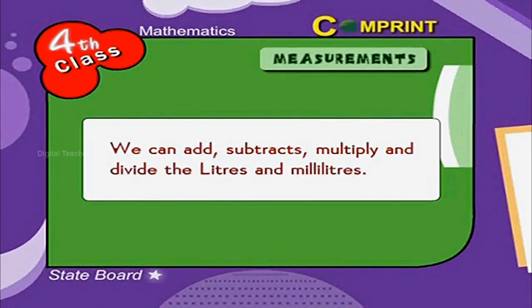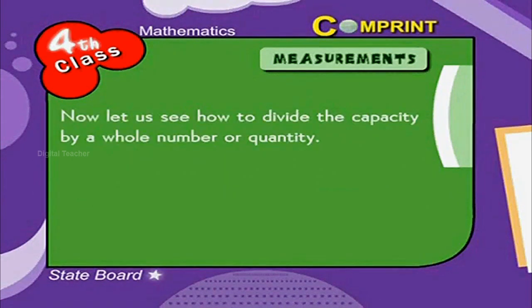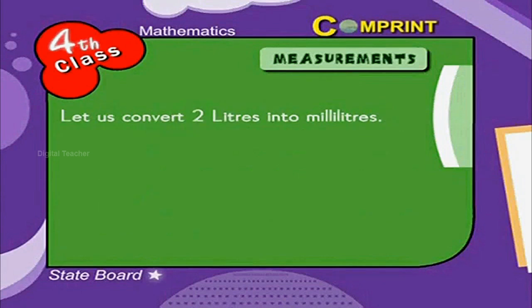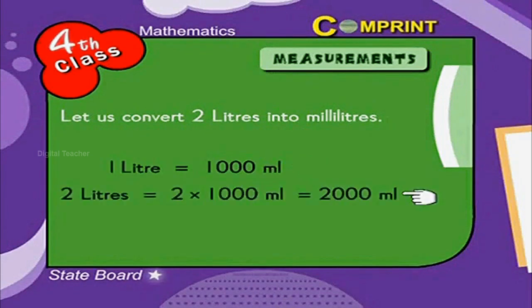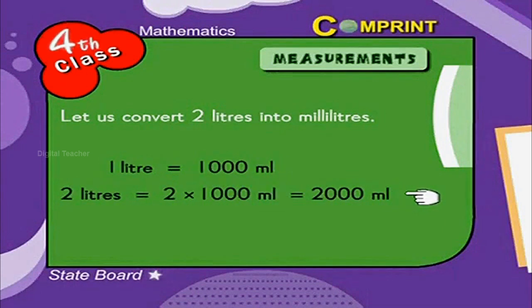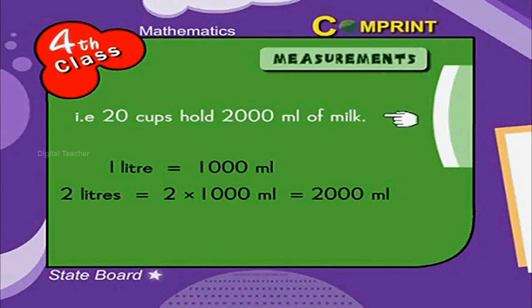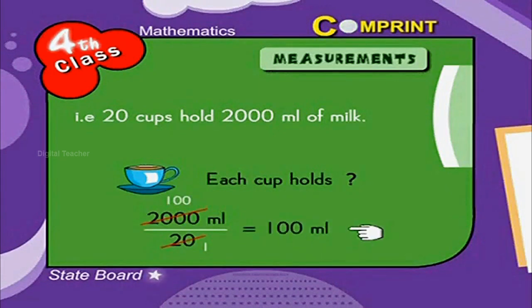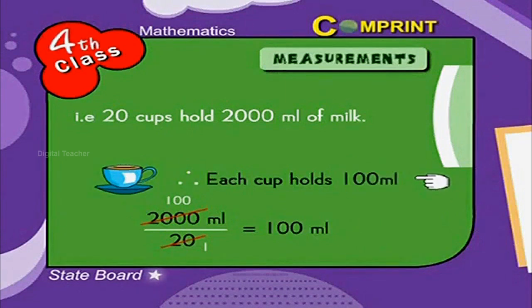As before, we can add, subtract, multiply, and divide liters and milliliters. Here is an example of dividing capacity by a whole number. If 2 liters of milk is poured equally into 20 cups, how much milk is poured in each cup? Let us convert 2 liters into milliliters: 1 liter equals 1000 milliliters, so 2 liters equals 2000 milliliters. That means 20 cups hold 2000 milliliters. Each cup holds 2000 milliliters divided by 20, which equals 100 milliliters.